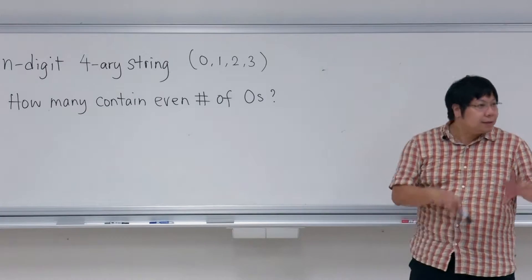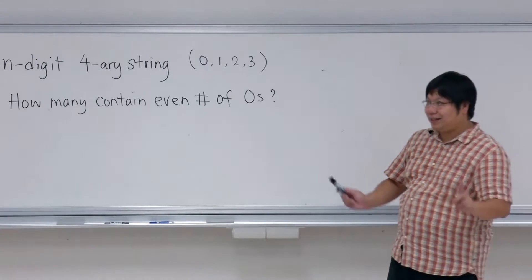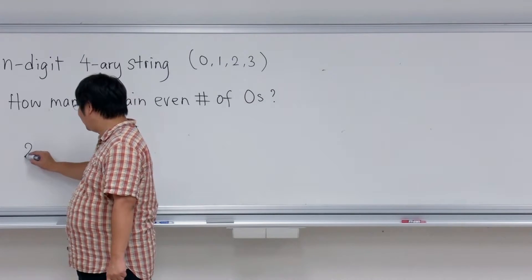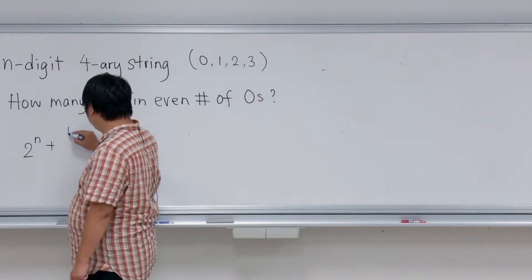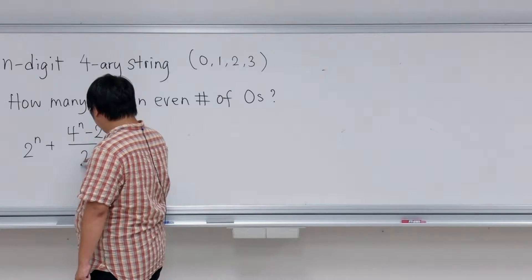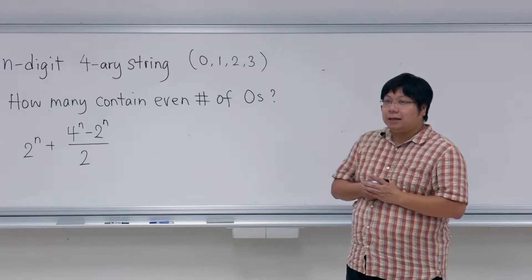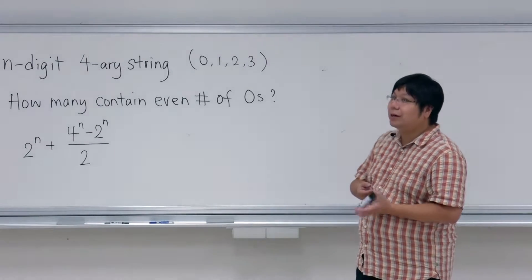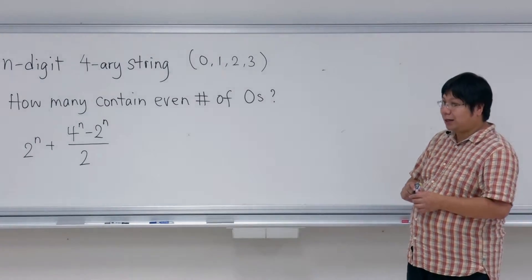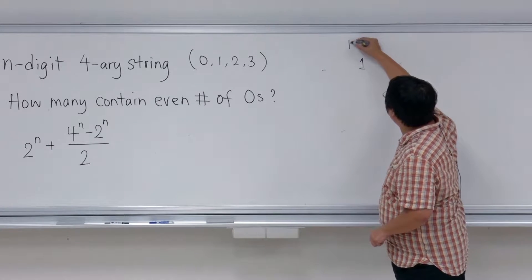Suppose you have tried small values of n and you get a conjecture. The formula actually looks like (4^n + 2^n) / 2. Now I'm asking you for an explanation of why this is correct. Let's check: for n=1, one digit.